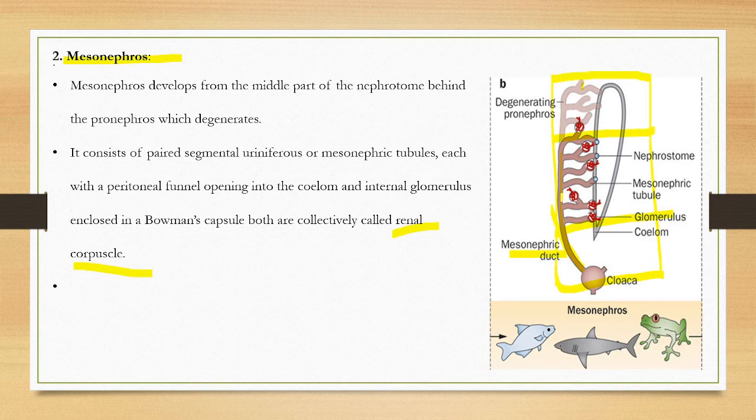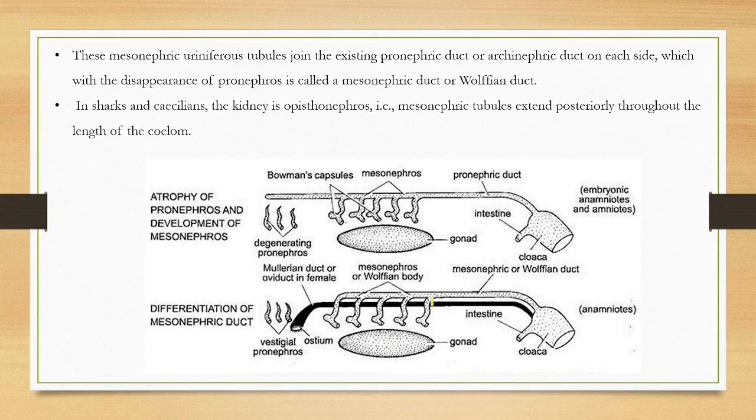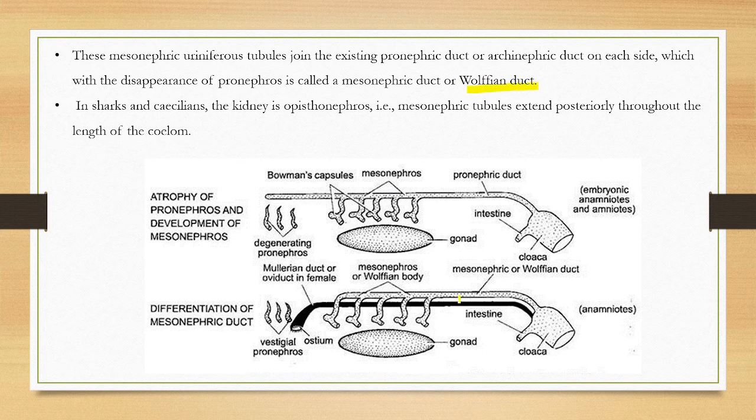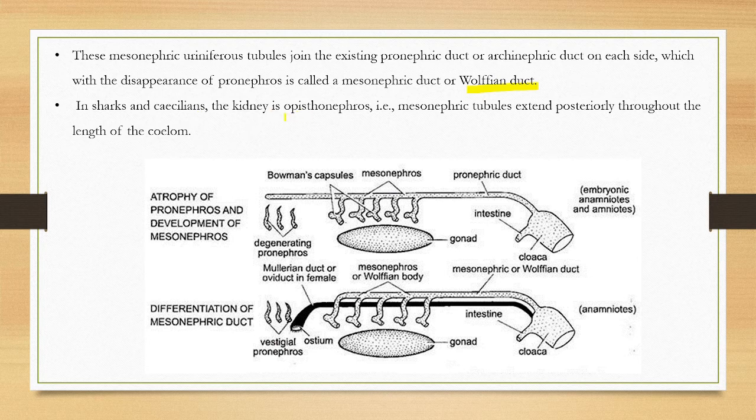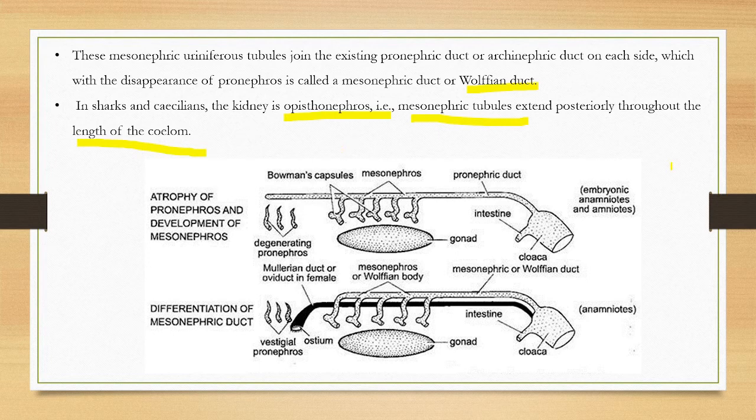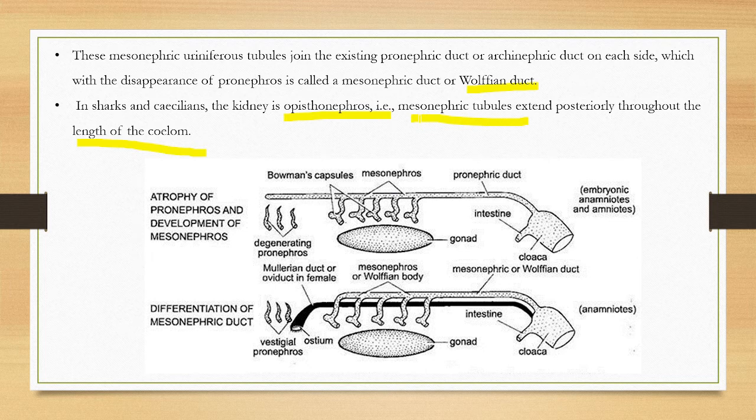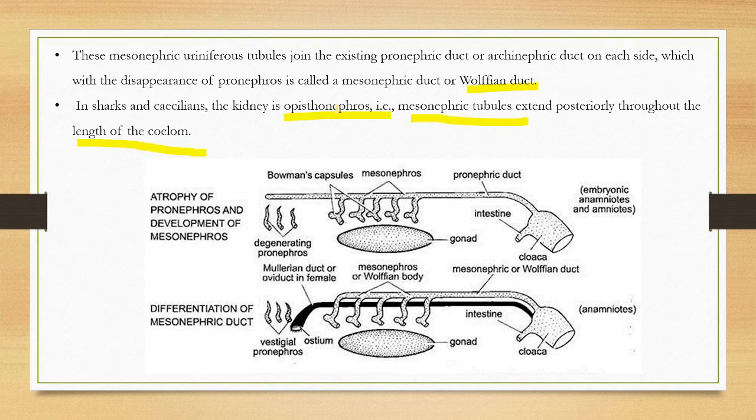Mesonephric duct is also the Wolffian duct. The kidney is opisthonephros. Opisthonephros is a mesonephric tubule. This is in lower vertebrates. The kidney is found in fish and amphibians.